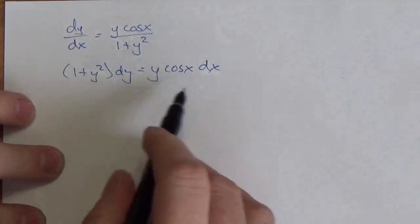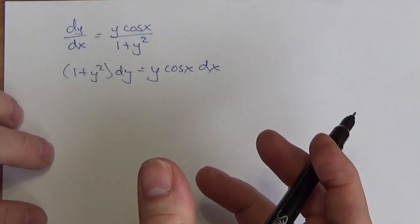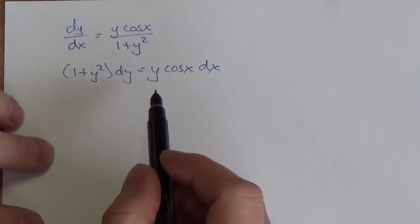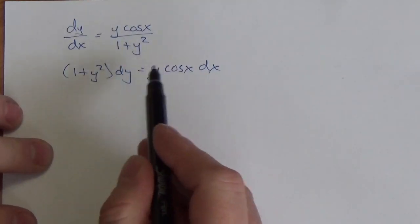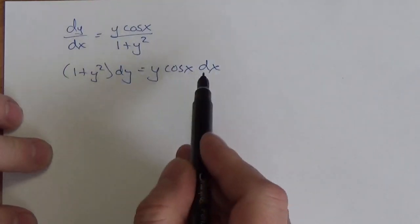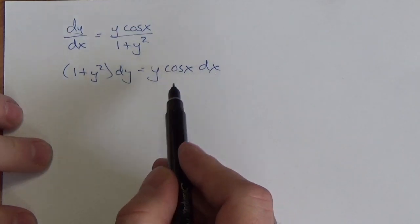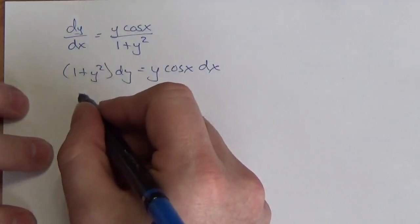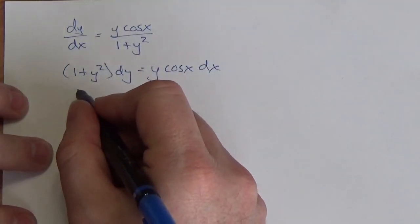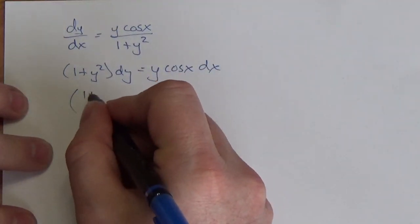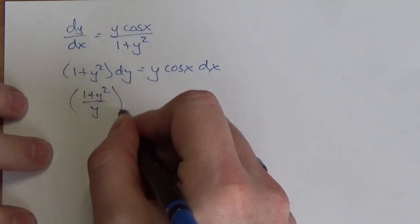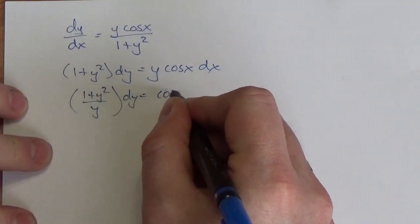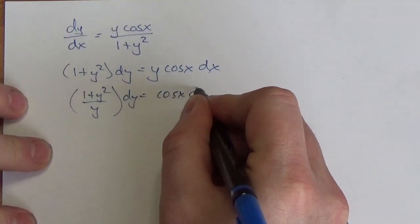Now, right on the face of it, it doesn't look like I've actually separated the variables because in truth I haven't. The y is still over here with the x differential, but I can divide through by that and I will get 1 plus y squared over y dy is equal to cosine of x dx.